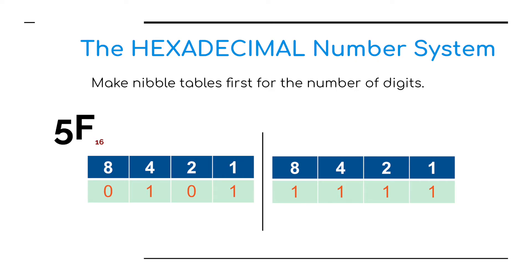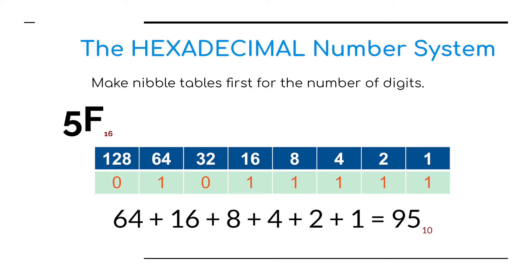Taking that a step further — if we go back to the standard system of 1, 2, 4, 8, doubling every time up to a full byte of information — we can see that we've got one lot of 64, a 16, an 8, a 4, a 2, and a 1. We add all those numbers together and we get a base 10 decimal number of 95.